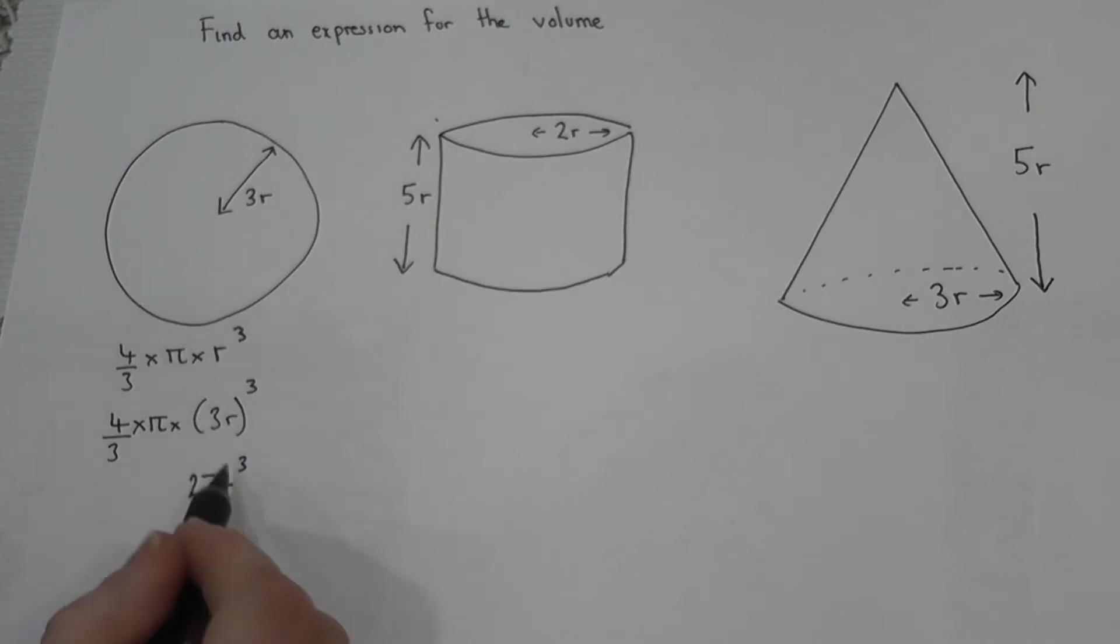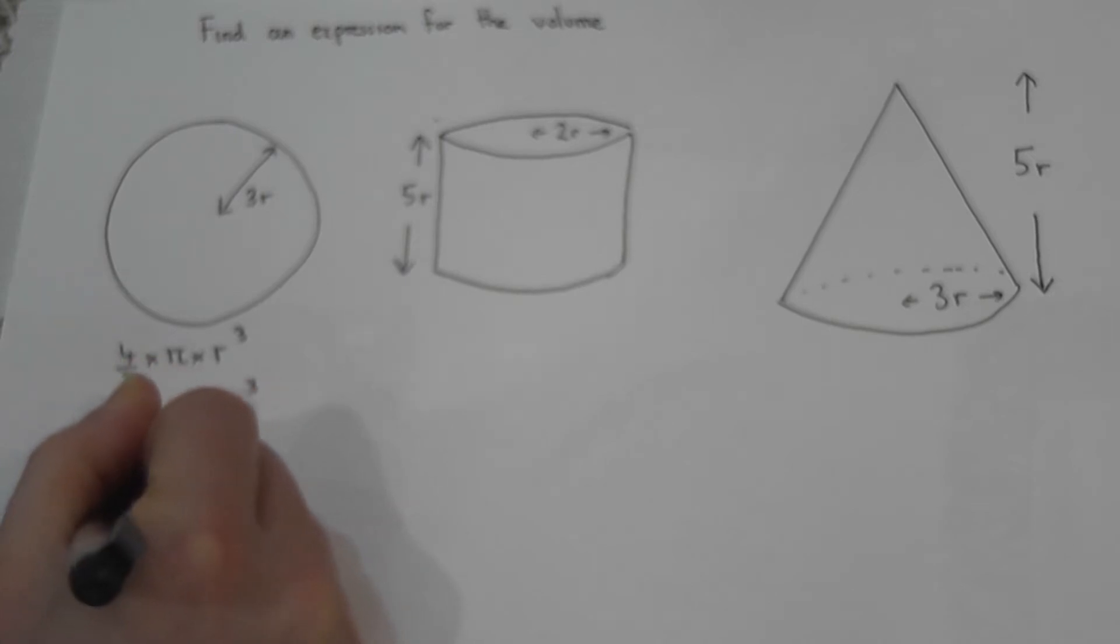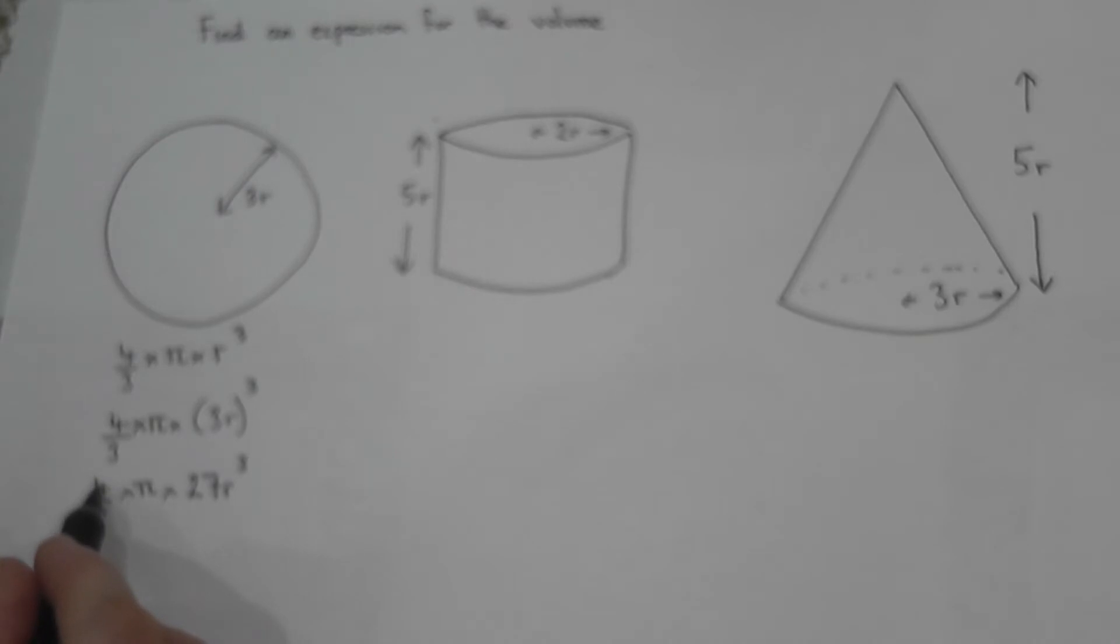So this becomes 27 lots of r cubed times by pi times by four thirds. This can be simplified: 4 times 27 is 108 pi r cubed all over 3.